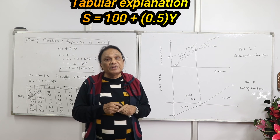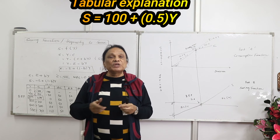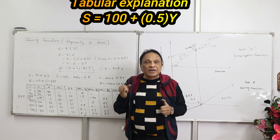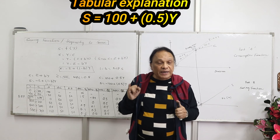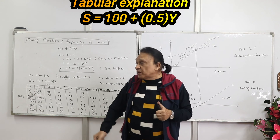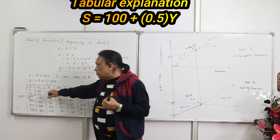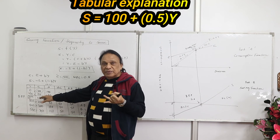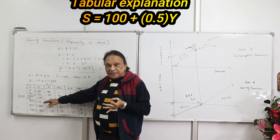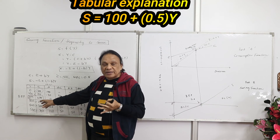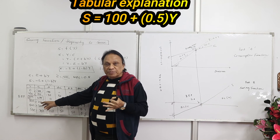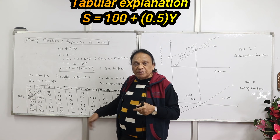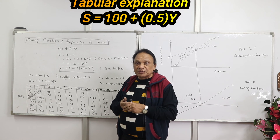Two or three key points to remember: First, income in the economy can be zero but consumption can never be zero — consumption at zero income is called autonomous consumption. Second, initially consumption is greater than income; at the break-even point income equals consumption and savings are zero; after the break-even point income is greater than consumption and savings become positive.